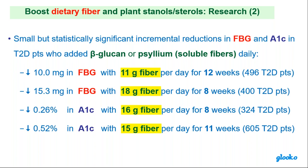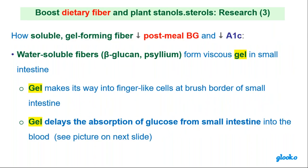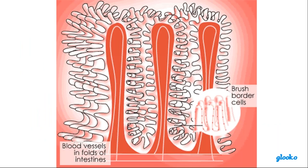The more soluble fiber — with psyllium and beta-glucan — the patients received over a longer period of time, the more you can see a drop in fasting blood sugar and A1C: progressive reductions with more soluble fiber. How does soluble fiber reduce A1C and blood sugar? It forms a gel that gets trapped in the finger-like cells at the brush border of the small intestine. Glucose from food crosses through the small intestine walls into the blood, but when the gel is trapped there, the glucose has to work its way through the gel first — so it takes longer for glucose to get into the blood.